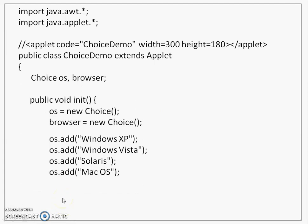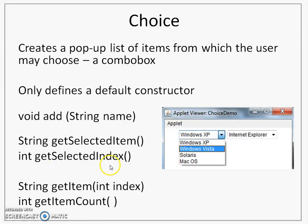I can also know how many items in total are in the combo box by using the getItemCount method. In the demo program from the previous slide, there are two combo boxes: the first has a list of operating systems and the second has a list of browsers.